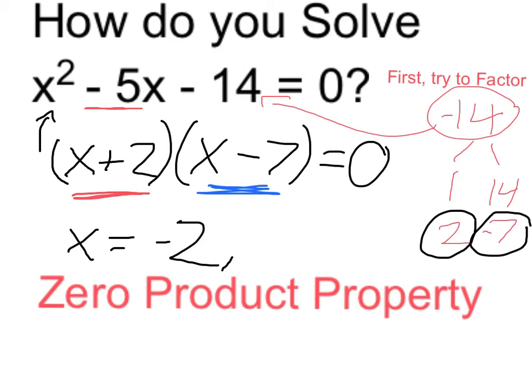Or alternatively, if x is a positive 7, 7 minus 7 would be 0. So these are my two possible solutions to the original equation.